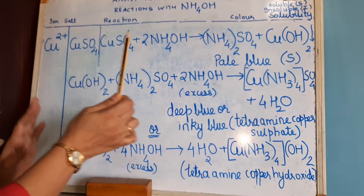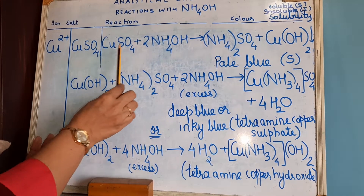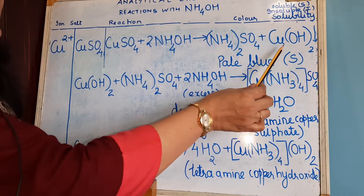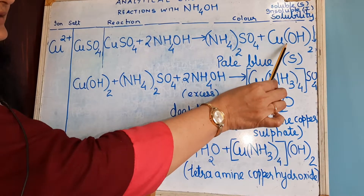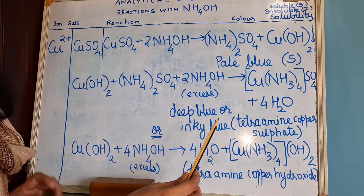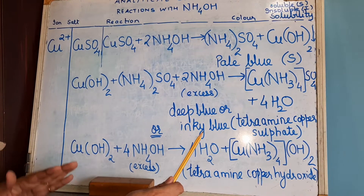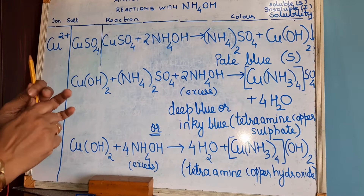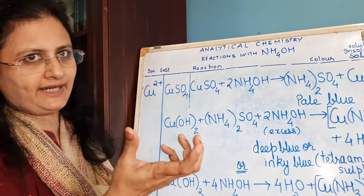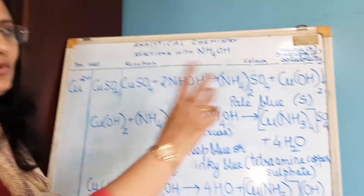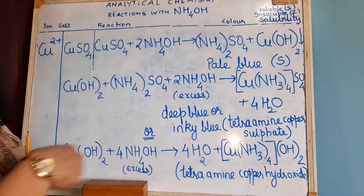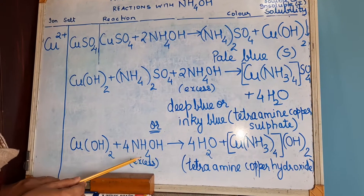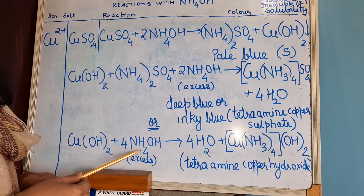In one test tube you are adding copper sulphate and you get copper hydroxide and ammonium sulphate. Now ammonium sulphate is soluble, so it will be a supernatant — the liquid above the precipitate. If you pour out that supernatant and take only the precipitate which is copper hydroxide, then in that copper hydroxide you add excess of ammonium hydroxide.